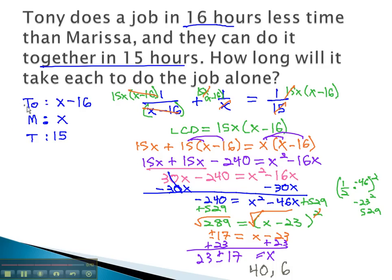However, remember, Tony is going to do it in 16 hours less. If x was 6, like our second answer suggests, 6 minus 16 would be negative 10. It would not make sense that Tony would do the job in negative 10 hours. For this reason, the 6 does not seem to work in this problem. The only answer for x, or Marissa, is 40 hours.